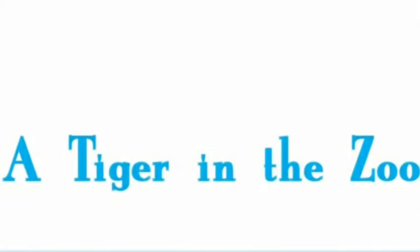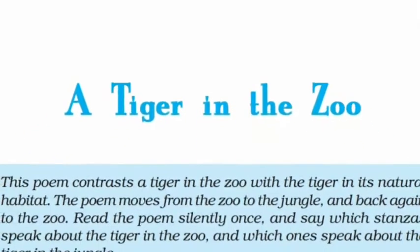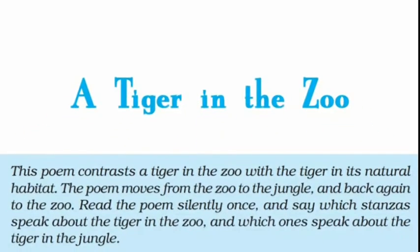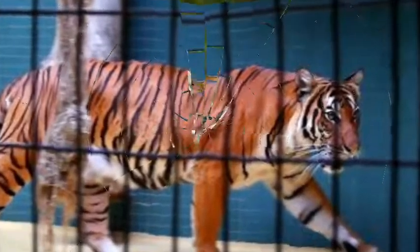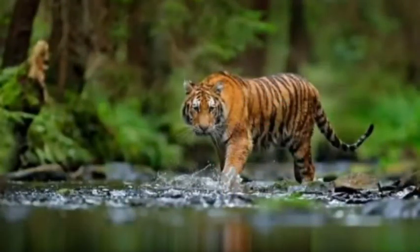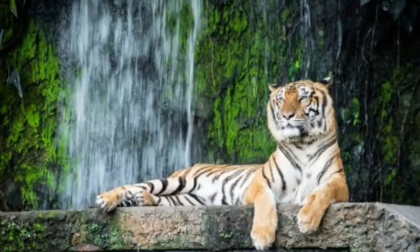A Tiger in the Zoo is a poem which explains the agony and helplessness of a caged tiger that lives in a zoo. The poem contrasts a tiger in the zoo with the tiger in its natural habitat. There is a contrast in the mood and environment of a tiger when he is in the zoo and when he is in the forest.